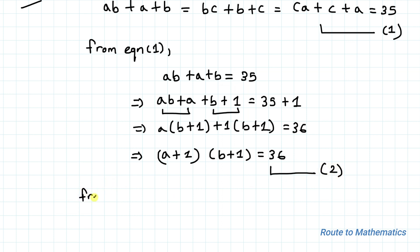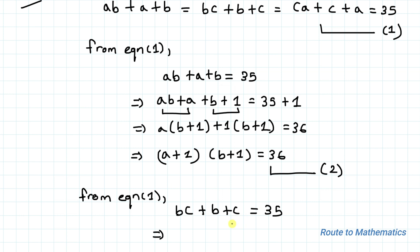From equation 1, we can write BC plus B plus C equals 35. Similarly, adding 1 to both sides and factoring, we can directly write (B+1)(C+1) equals 36. Let's take it as equation 3.